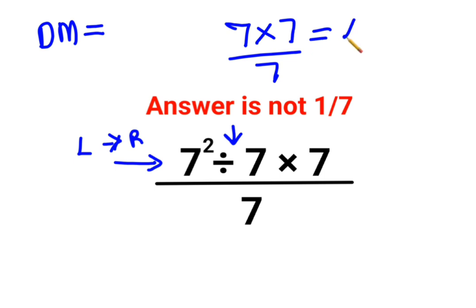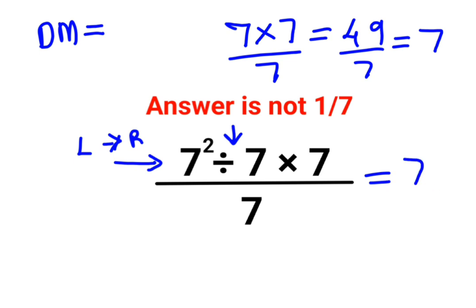So you get 49 upon 7, which gives you 7. The answer for this question is just 7, and not 1 over 7.